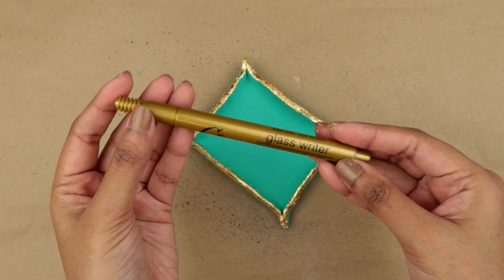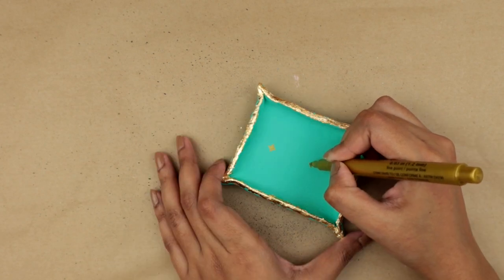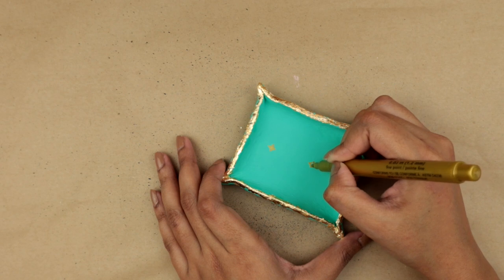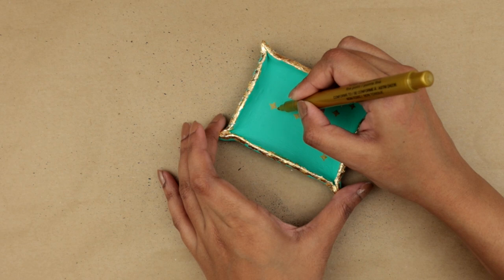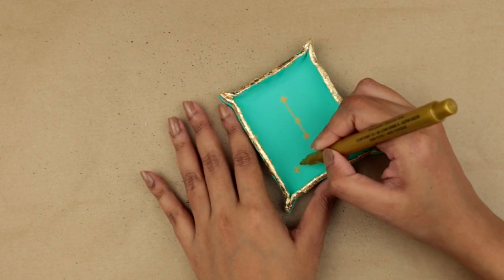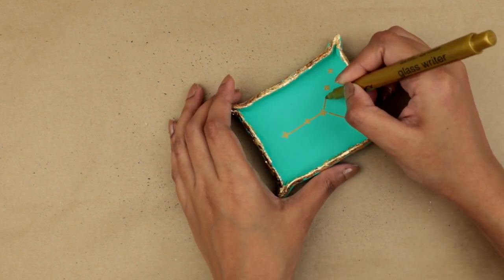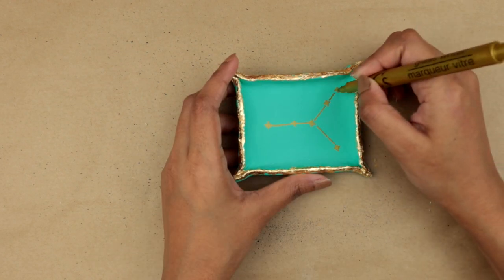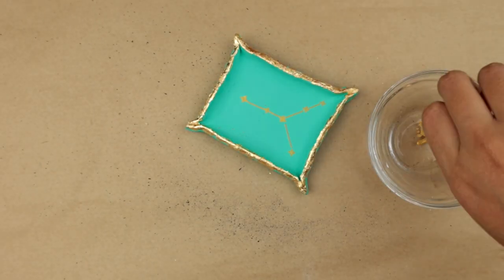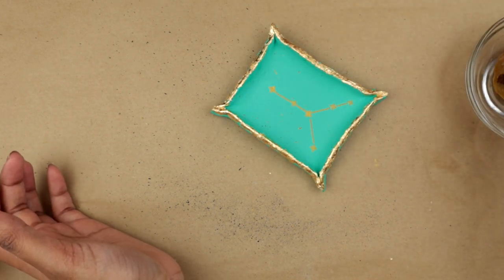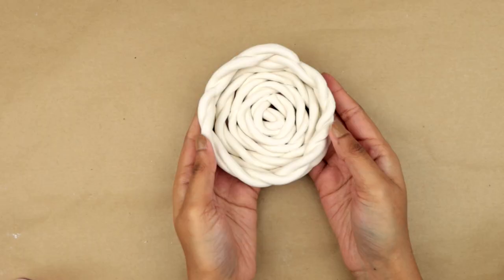I will continue this process until all the four edges of the dish are wrapped in gold leaf. Now I'm using my glass rider in gold color and I am drawing my zodiac constellation. You can customize it to any constellation you want. So first I'm drawing the stars and then I am going to connect the stars by drawing a line between them. To spruce it up a little more, I am taking my gold acrylic paint and using a brush I am flicking the paint on the piece. This completes our constellation trinket dish and I am so impressed by how this is looking.